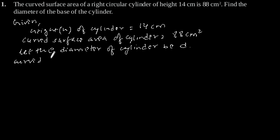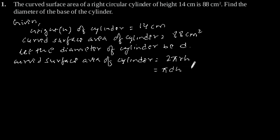Curved surface area of cylinder is equal to 2πrh, where r is the radius of base of cylinder. This can also be written as πdh, since diameter is equal to 2 times radius.